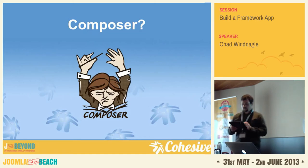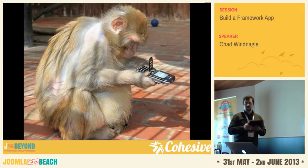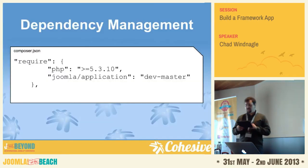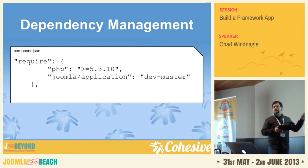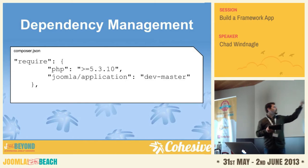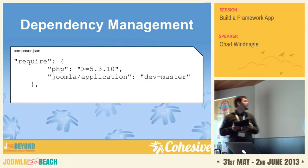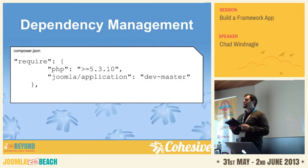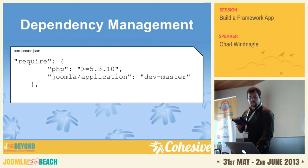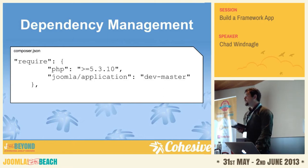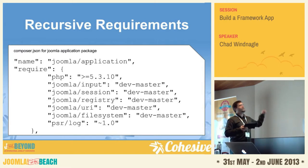Composer is this really cool thing, and I'll tell you a little bit about it. It's dependency management. This right here is how we label dependencies. We simply say I want a specific Joomla framework package, like Joomla application, and Composer will read that and say they want the application — go get it and install it for them. The really cool thing about this is the application has its own set of dependencies, and as the developer, I don't really want to know what those are. I just want Composer to deal with that for me.